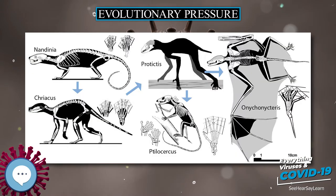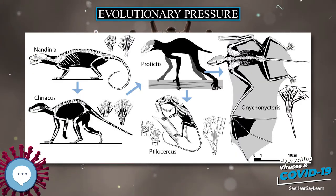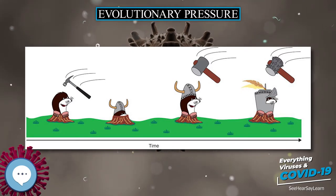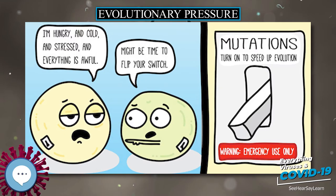Antibiotic resistance may arise out of standing genetic variation in a population or de novo mutations in the population. Either pathway could lead to antibiotic resistance, which may be a form of evolutionary rescue.